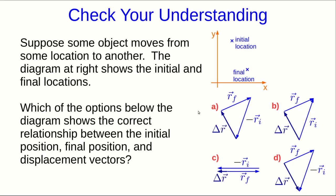Let's check your understanding. Some object starts at this x and moves to this x. And I want you to choose which of these shows the correct relationship between the displacement vector and initial and final position vectors for this object.